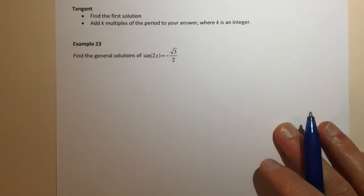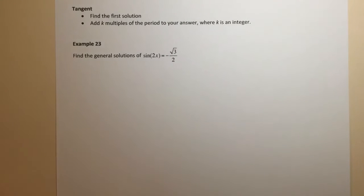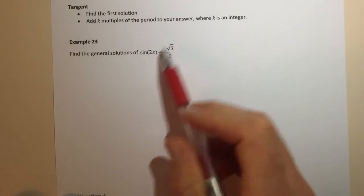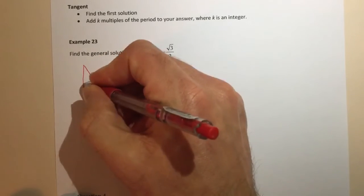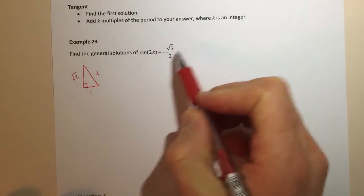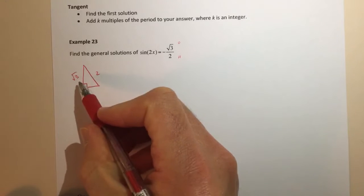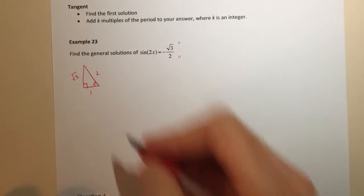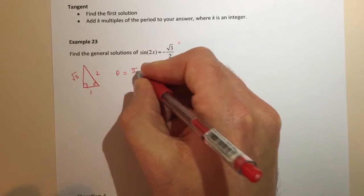So example 23 says find the general solutions of sin(2x) = -√3/2. So to start off we treat this the way we always would. We would say okay well if I'm thinking sine of some angle gives me √3/2 I need to know what my first quadrant angle is or what my base angle is. If it's sine well then √3 is opposite, 2 is hypotenuse, and if I need to make √3 the opposite from the triangle then this must be my angle here which is π/3. So θ or my base angle or whatever I want to call it is π/3.